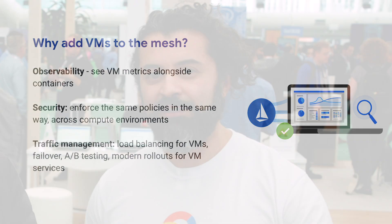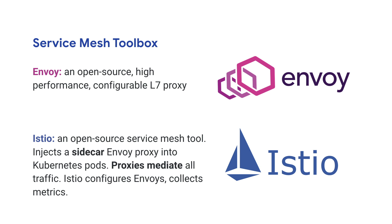The harsh reality is that most customers we talk to all have virtual machines running in their environment. These could be databases, legacy stateful applications. Even if they're migrating their applications over to Kubernetes, they need a way to talk to these applications. And for that, we're using Istio, which is a service mesh technology that Megan is going to talk a little bit more about.